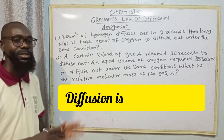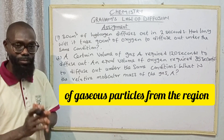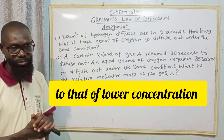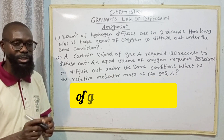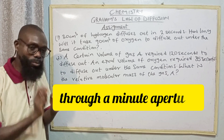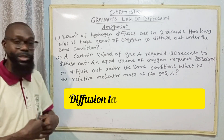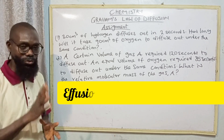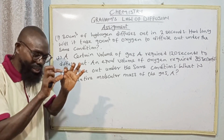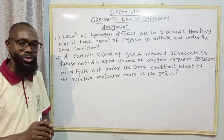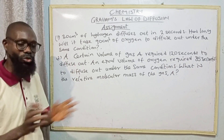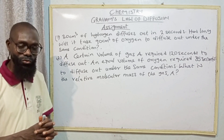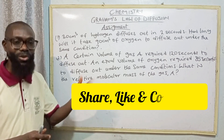Now let's look at the differences between diffusion and effusion. Diffusion means the movement of gaseous particles from a region of higher concentration to a region of lower concentration. Effusion is the movement of gas particles through a minute or small aperture. Diffusion takes place freely at any time, while effusion has to take place under pressure — the gas is forced out through a very small hole. We'll be talking about another topic under the gas laws in the next class. Don't forget to share, like, and leave a comment. Thank you very much.